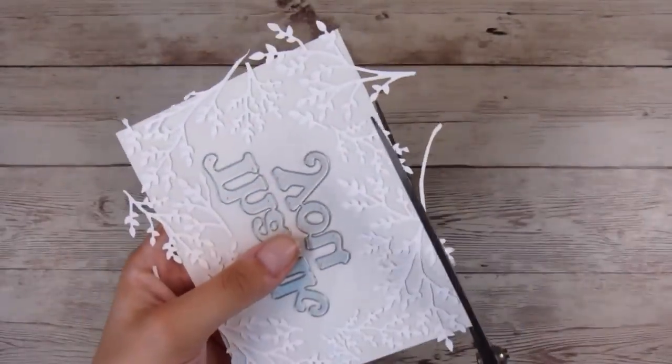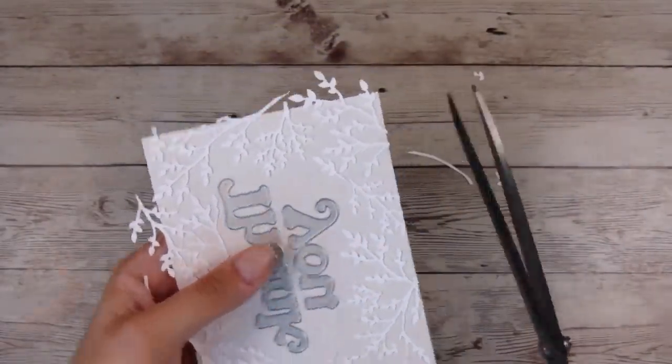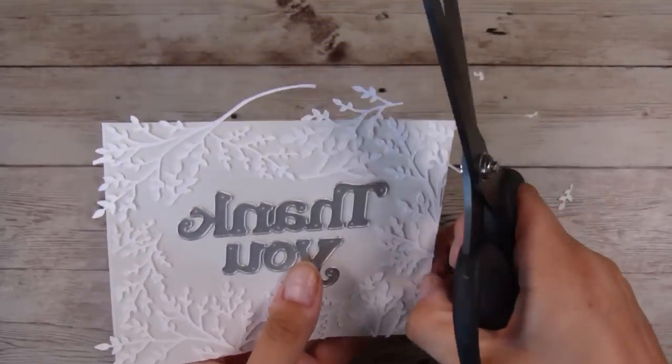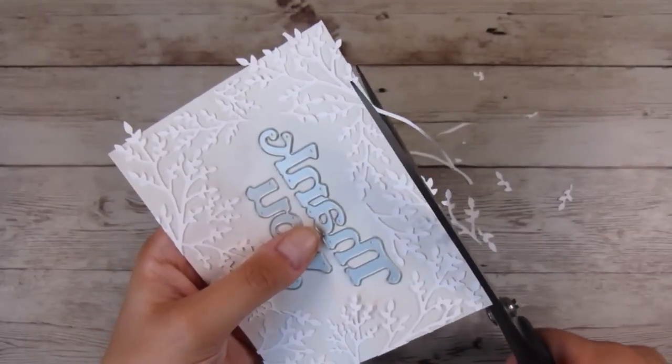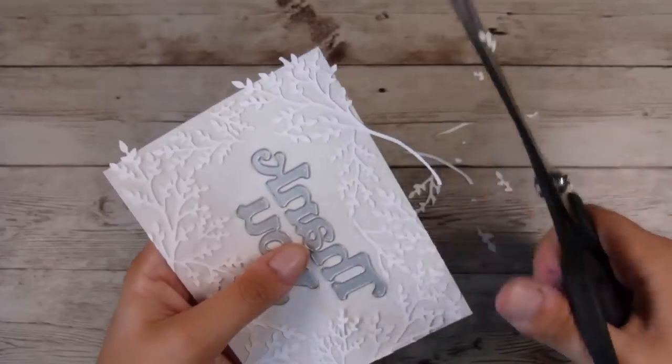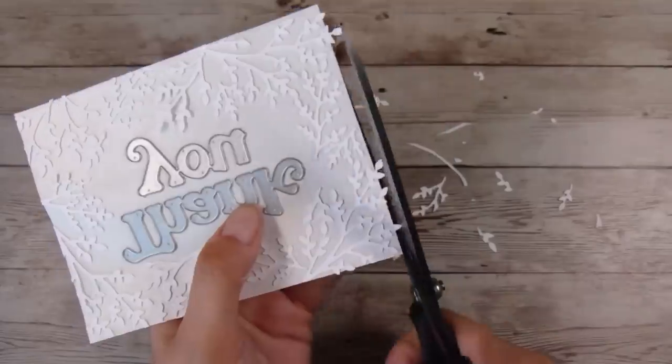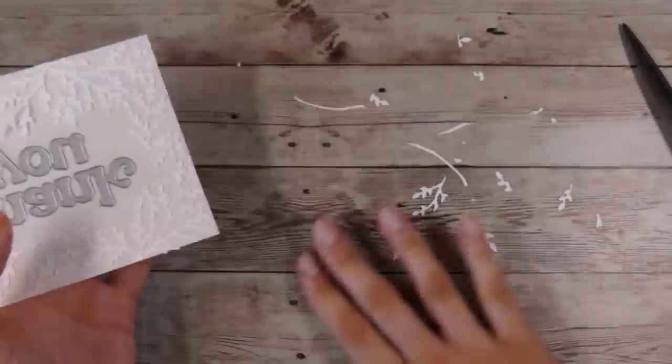In case you missed it, I am using scissors this time to trim around the outside. Last time I used a larger rectangle die which works just as well, but with these nice fine die cuts I can cut really easily through them just using my scissors.